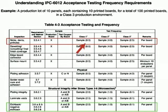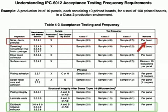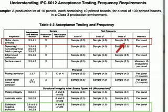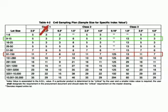Given that we have a production board as our sample, and that the remarks column states 'per board,' we know that the number of samples to be evaluated within a lot are determined at the printed board level. As we go through these examples, we'll see that this last column in Table 4.3 is really the key to understanding how many samples need to be evaluated for your lot to be considered acceptable per IPC-6012. We're going to take this 2.5 AQL level and go over to Table 4-2 in IPC-6012.